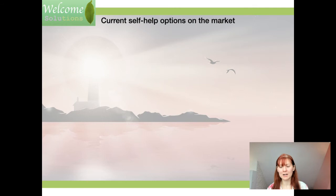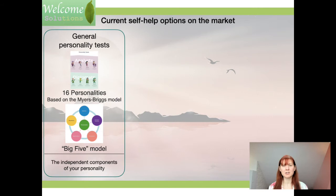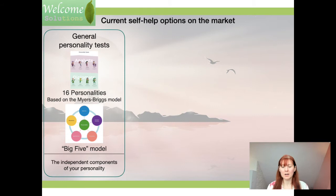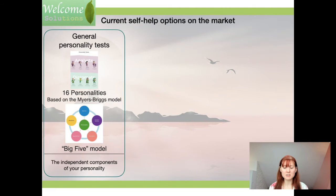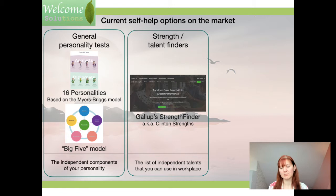You can take general personality tests such as 16 Personalities — based on the Myers-Briggs model, which is based on Carl Gustav Jung's model — or the classic Big Five model, among thousands of others. These tests ask you questions about your everyday behaviors and decisions, then decompose your personality into independent dimensions: four dimensions in 16 Personalities, five factors in Big Five, and grade you on each scale. Then there are strength finders such as the famous Gallup StrengthsFinder, which tells you your top strengths in the workplace.